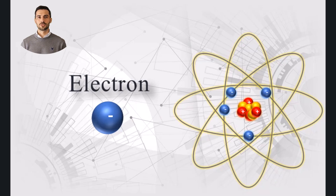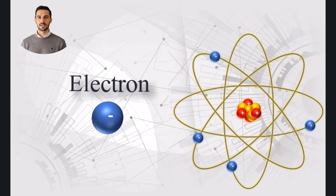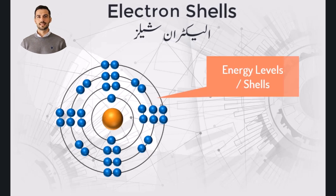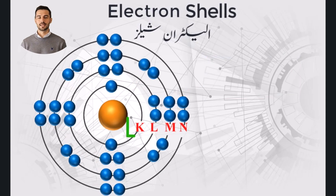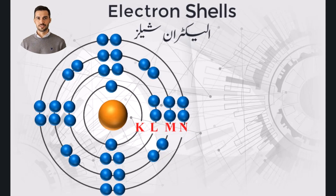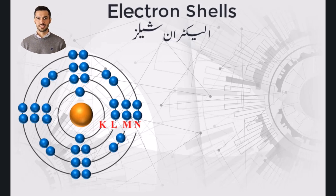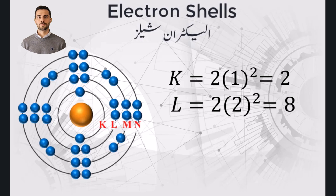Surrounding the nucleus are electrons, which are extremely light and carry a negative charge. Electrons revolve around the nucleus in specific orbits called shells. These shells, designated as K, L, M, and N, represent different energy levels. The number of electrons that can exist in a shell is determined by the formula 2N², where N is the shell number. The first shell (K) can hold 2 electrons, the second shell (L) can hold 8 electrons, and the third shell (M) can hold 18 electrons.